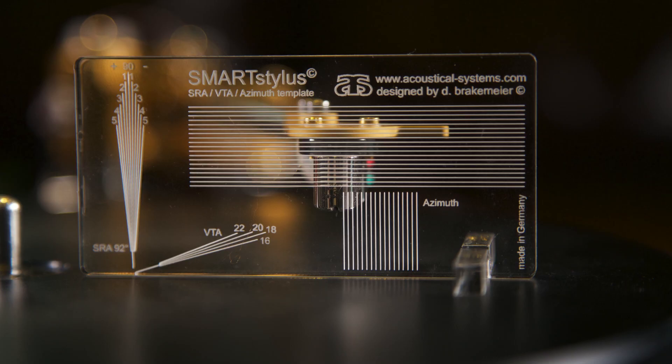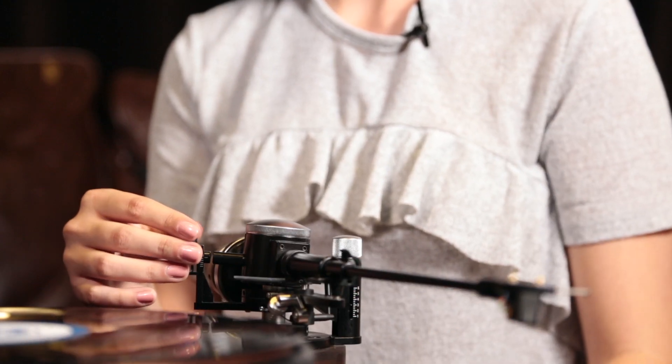Azimuth refers to the horizontal balance of the cartridge when viewed from the front. This in turn determines the angle at which the stylus sits on the record groove. The theoretical assumption is that when the cartridge is perfectly parallel with the record surface, the stylus will sit perfectly in the record grooves.